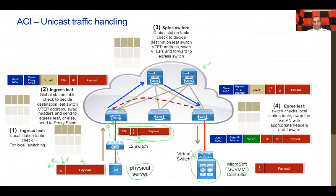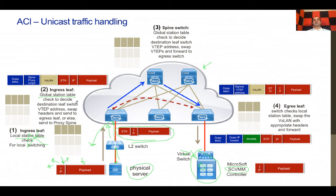When the frame arrives at the ACI leaf switch, it first consults its local station table to check if the destination is connected locally — there is no match. Second, the same leaf switch consults its global station table to find the destination IP, the corresponding MAC, and the egress VTEP IP address — which switch the destination is connected to. If it finds this information, it forwards the packet to the egress leaf switch in VXLAN format.